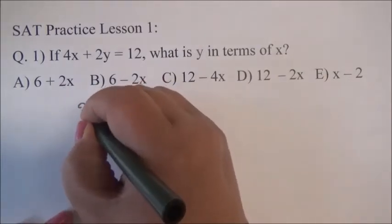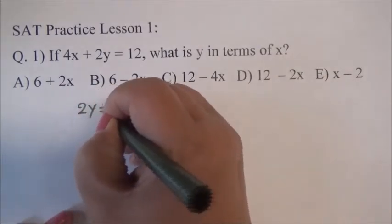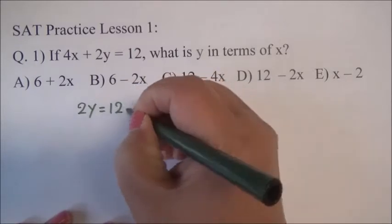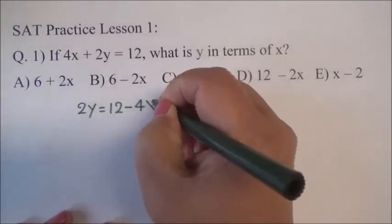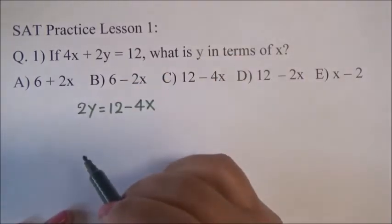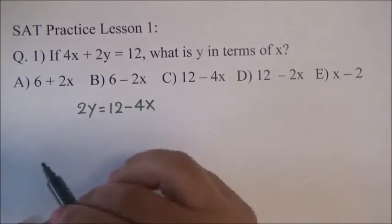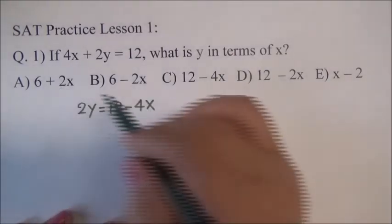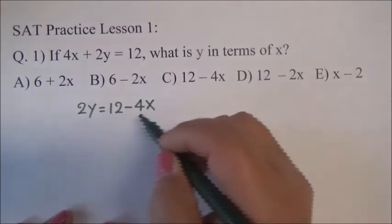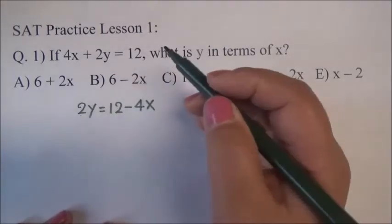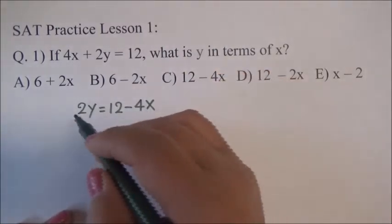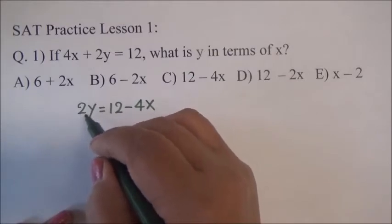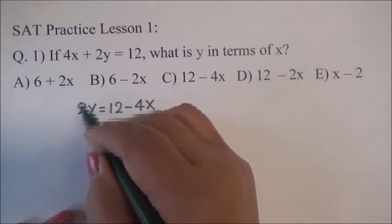We have to do 2Y is equal to 12 minus 4X because we move positive 4X to the right from the left. So, positive is going to be negative. And then, what do we have to do next? We have to make a coefficient 1 here.